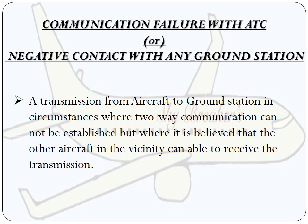If you have any doubt about what is part one or part two, please go through my previous video for better understanding. Communication failure with ATC, or negative contact with any ground station, is the transmission from aircraft to ground station in any circumstances where two-way communication cannot be established, but where it is believed that other aircraft in the vicinity are able to hear the transmission.